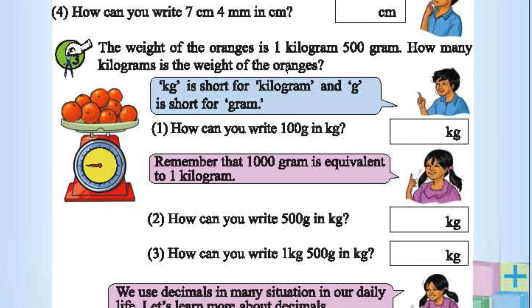The weight of the oranges is 1 kg 500 grams. How many kilograms is the weight of the oranges? 500 by 1000 is kg. So 5 by 10 is nothing but 0.5. So 1 plus 0.5 is 1.5. 1.5 kg.